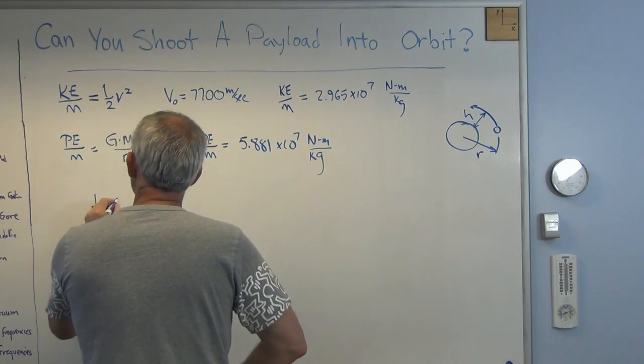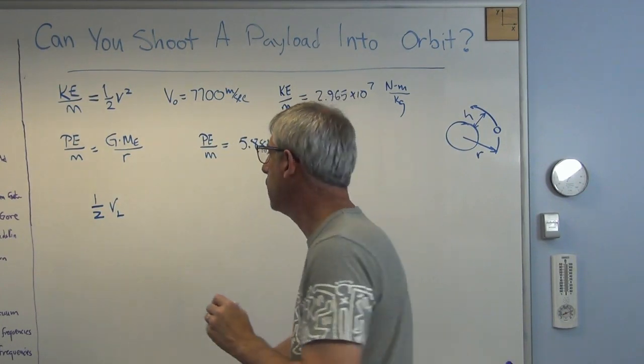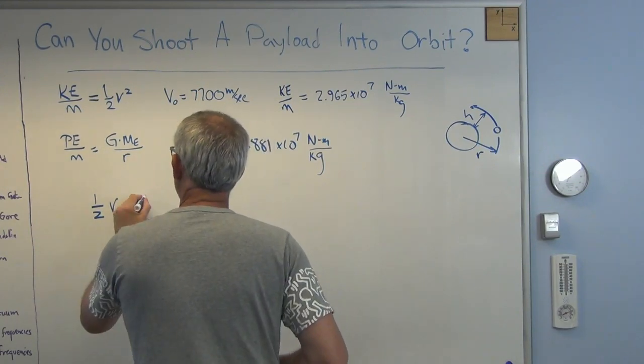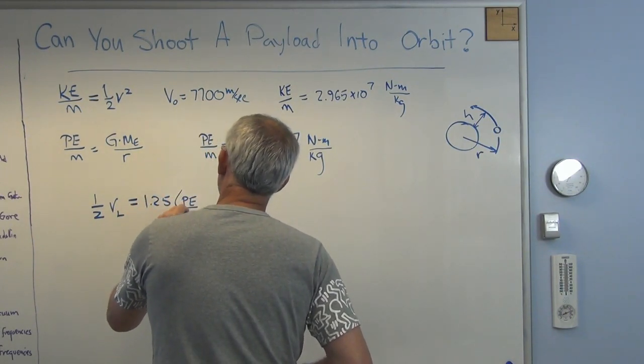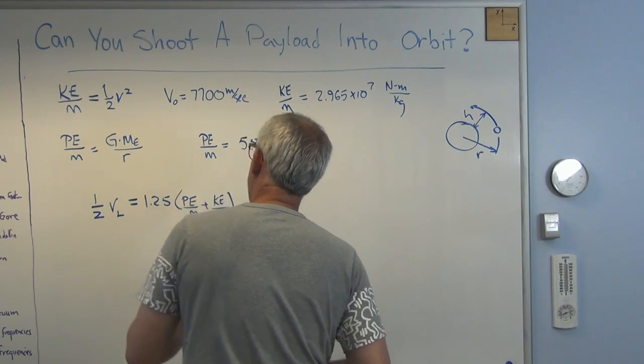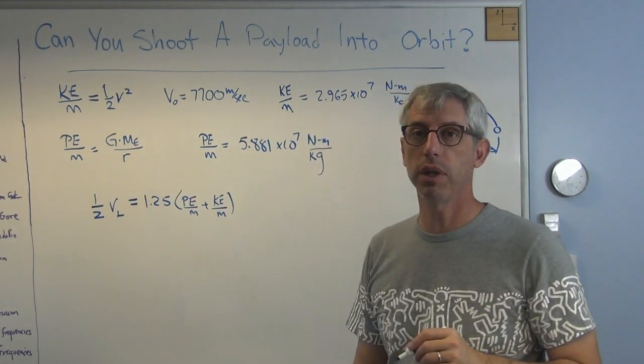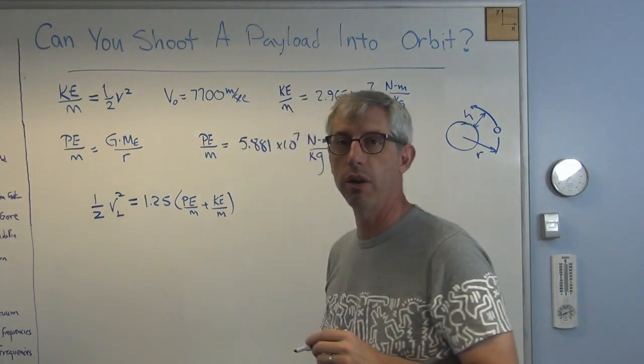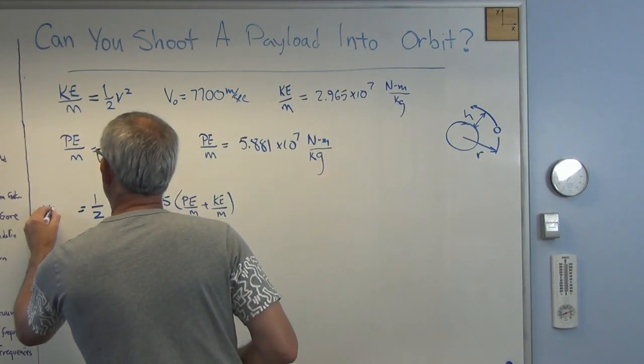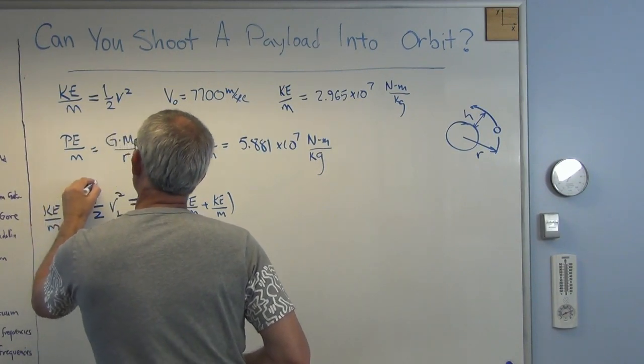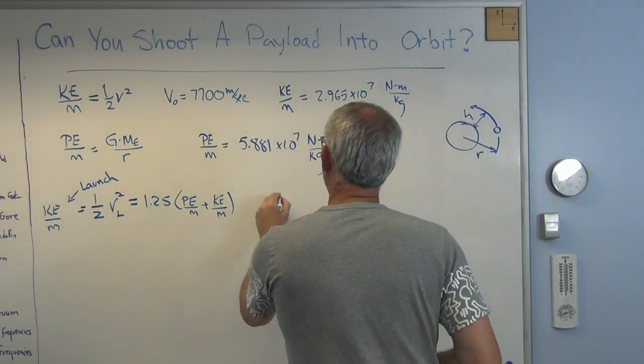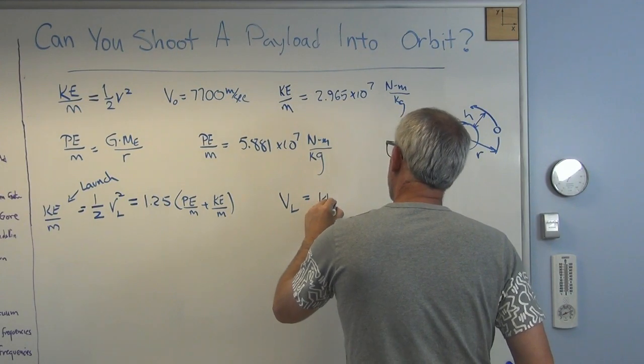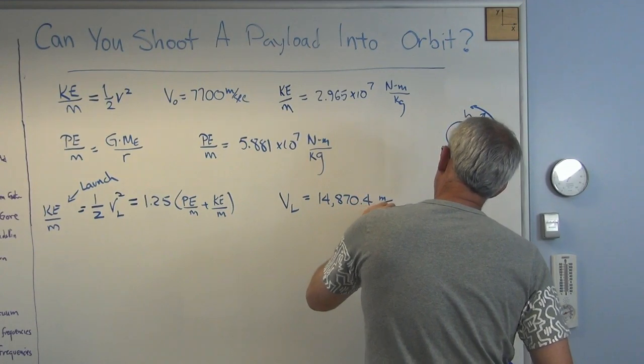If we lose 25 percent of our energy, we need an additional 25 percent to get through the atmosphere. So one-half V launch squared is going to have to equal 1.25 times those two numbers. I'm going to add 25 percent to it just as a guess that that's how much additional energy I'm going to need to punch through the atmosphere. And there's my kinetic energy I'm going to need at the ground at launch. If you work all that out, VL turns out to be 14,870.4 meters per second.